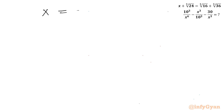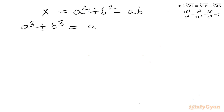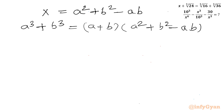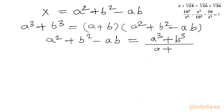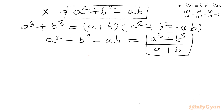Taking ab from both sides gives x = a² + b² − ab. Using the algebraic identity a³ + b³ = (a + b)(a² + b² − ab), we can write a² + b² − ab = (a³ + b³)/(a + b). So x = (a³ + b³)/(a + b).